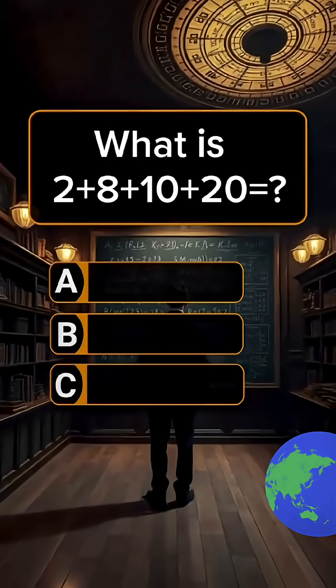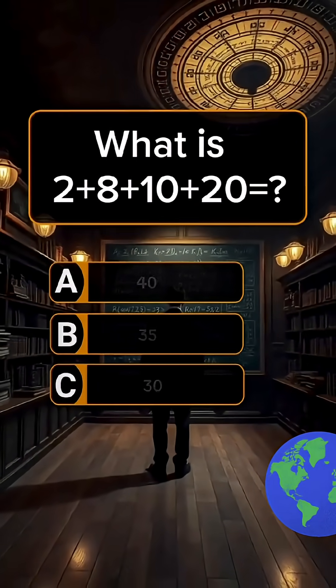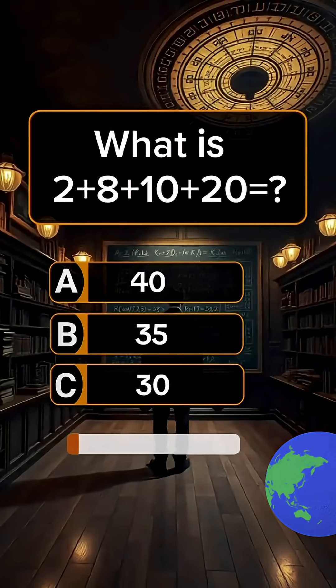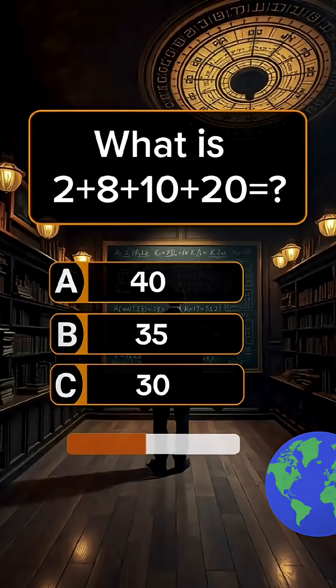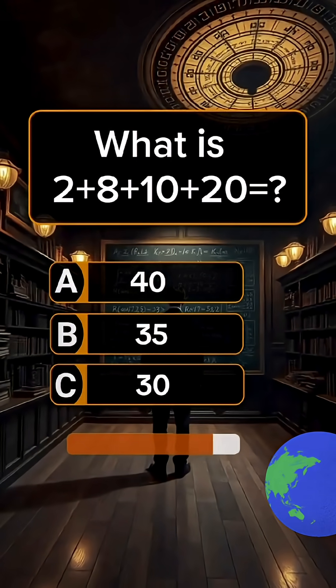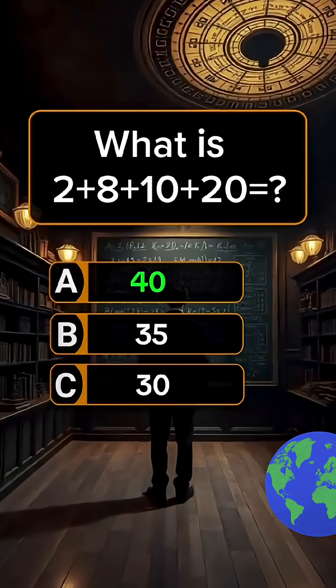Question 5. What is 2 plus 8 plus 10 plus 20? Answer A. 40.